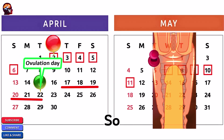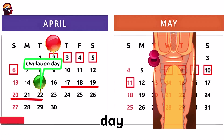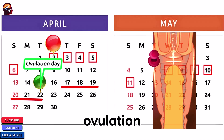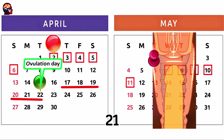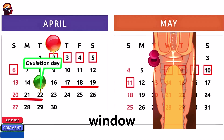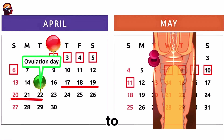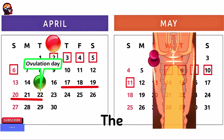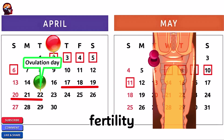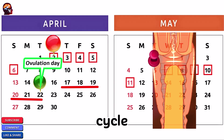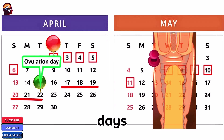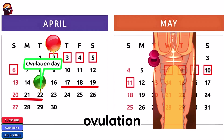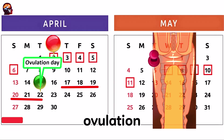So, for a 35-day cycle, ovulation occurs around day 21 and the fertile window extends from day 16 to day 21. The peak fertility period of each cycle is concentrated in the 2 days preceding ovulation and the day of ovulation itself.